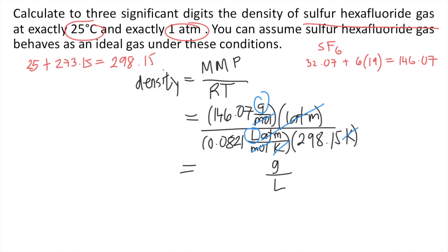Now grab your calculator and type these numbers. 146.07 times 1 divided by 0.0821 times 298.15. And that is equal to 5.97, approximately. So I already rounded this up. 5.97 grams per liter. And this is the answer to the question.